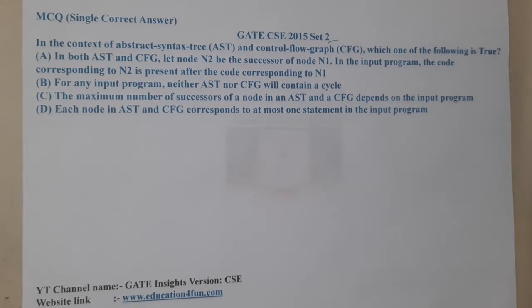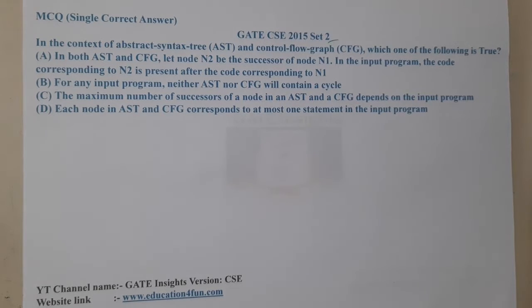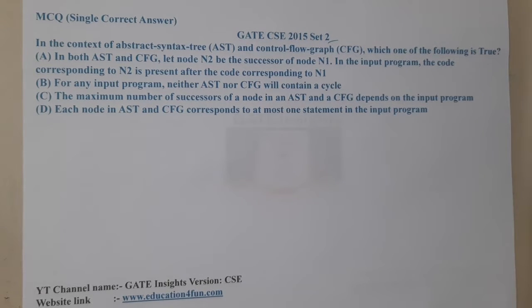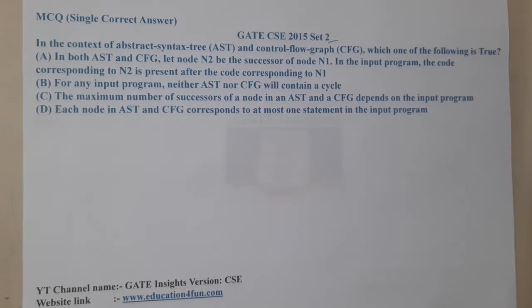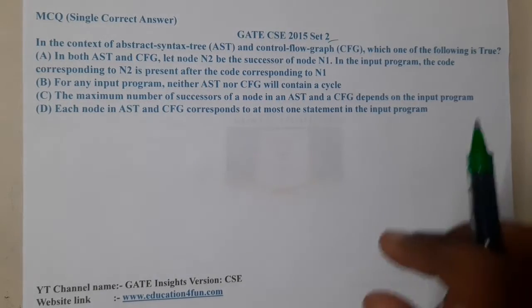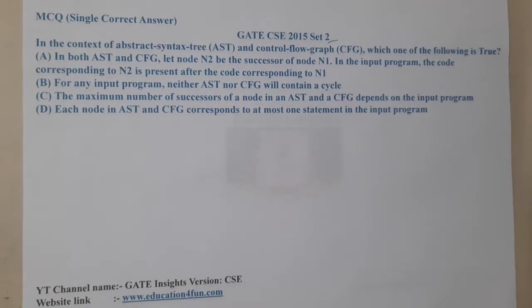If you recall, when do we draw abstract syntax trees? We draw them whenever we are working with semantic analysis. And when do we work with control flow graphs? Whenever we want to understand the exact flow — like the code is running from C1 to C2, and from C2 it might go to C3 or C4.